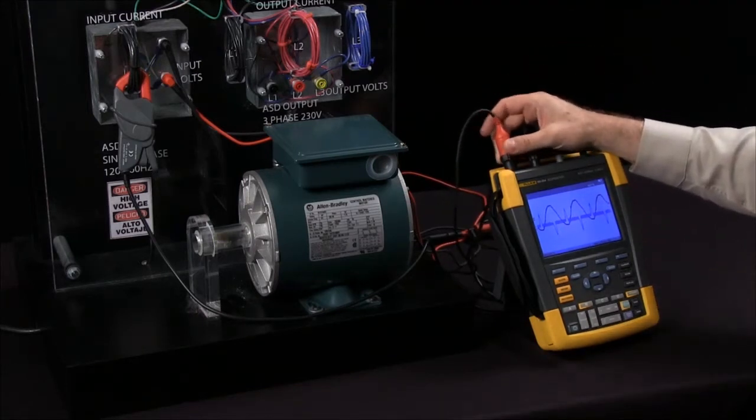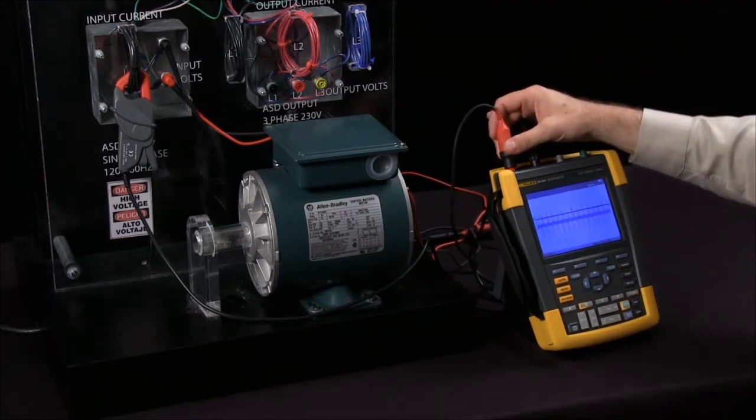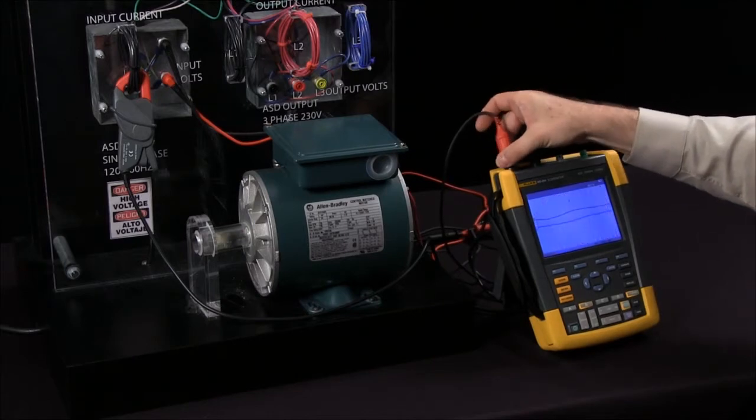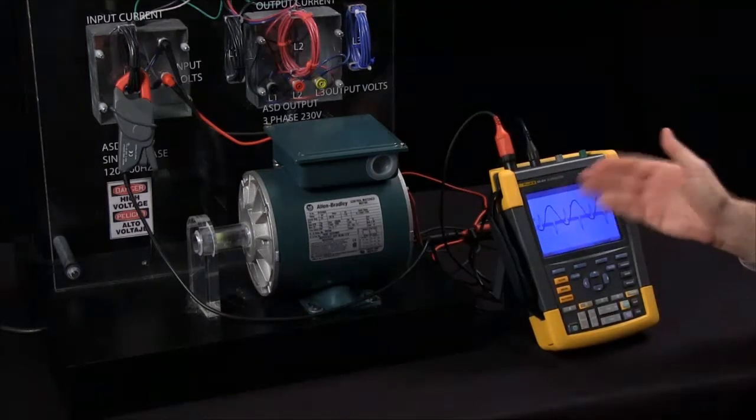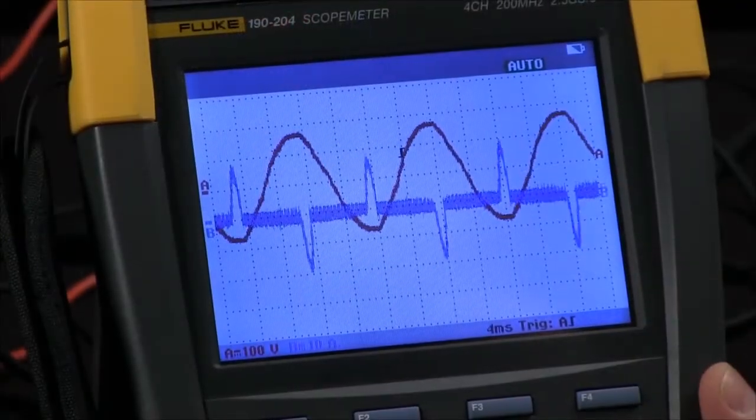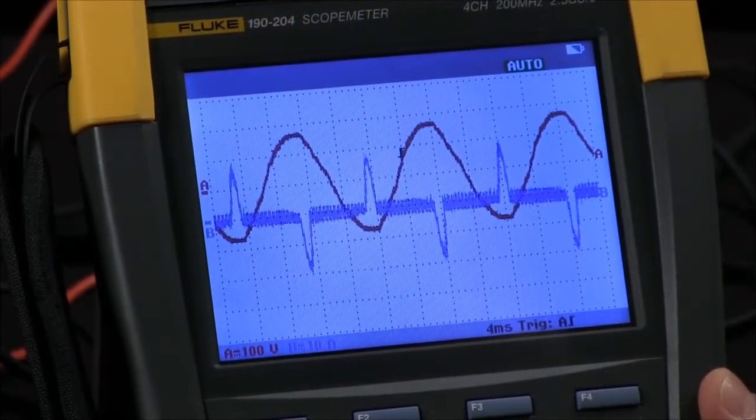As soon as you apply a signal to the meter, it will seek it out and give you at least three divisions of the waveform on the screen and set your amplitude and your time base automatically.